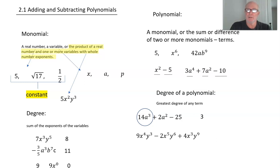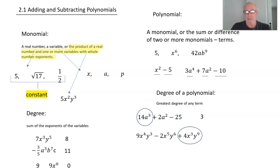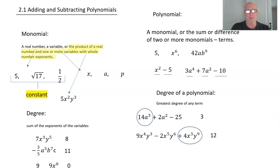Try to figure out this one: 9x⁴y³ − 2x⁵y⁶ + 4x³y⁹. Pause the presentation, figure out the degree, and then resume. The first term has 4 + 3 = 7. The second term has 5 + 6 = 11. The last term has 3 + 9 = 12. So the degree of that polynomial is 12.